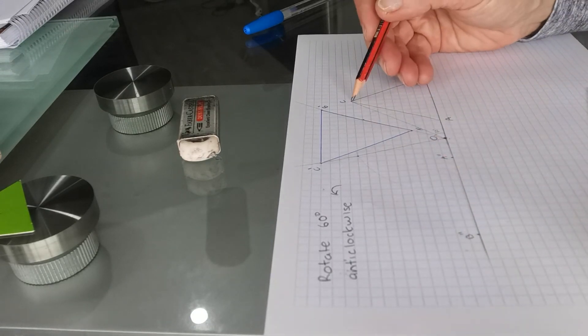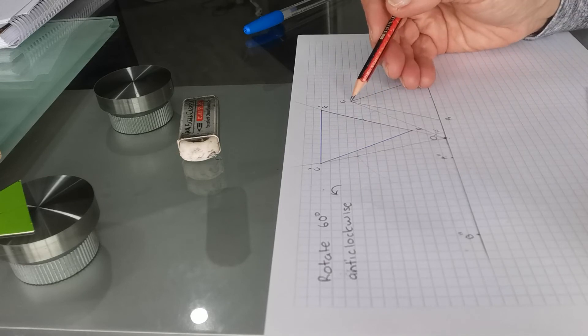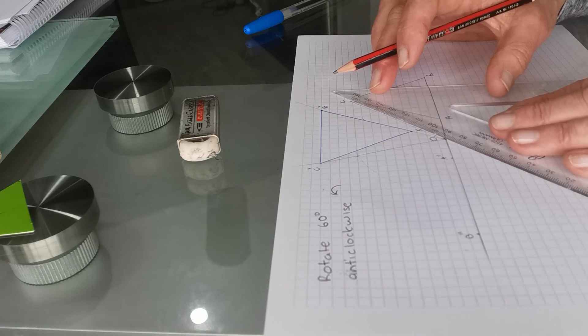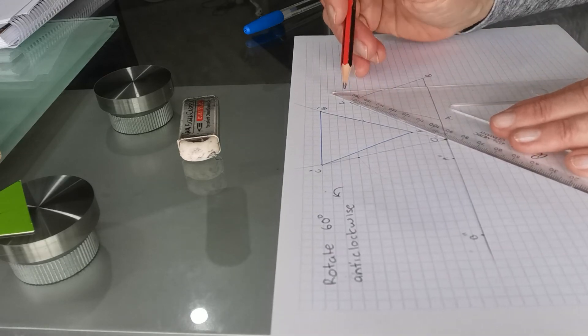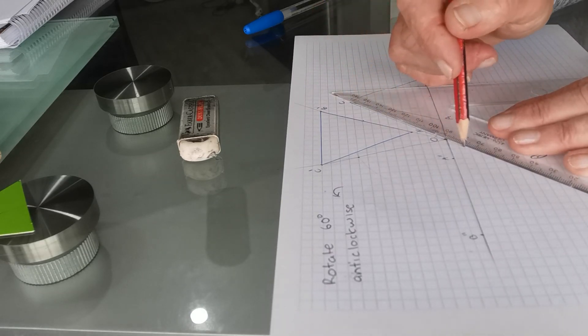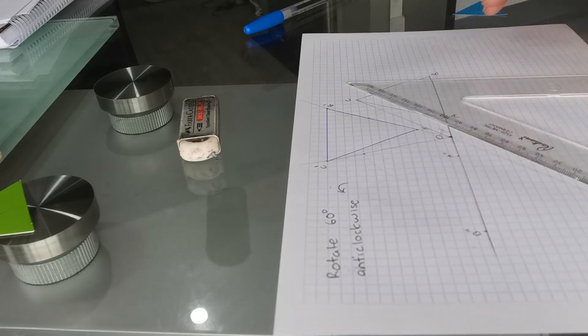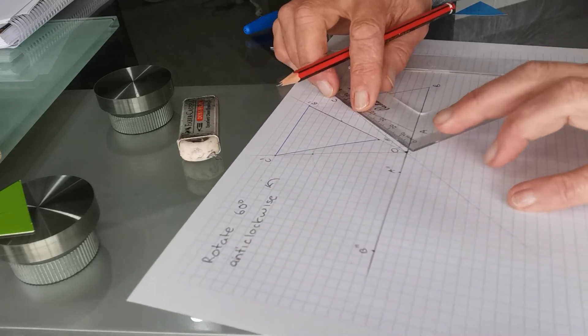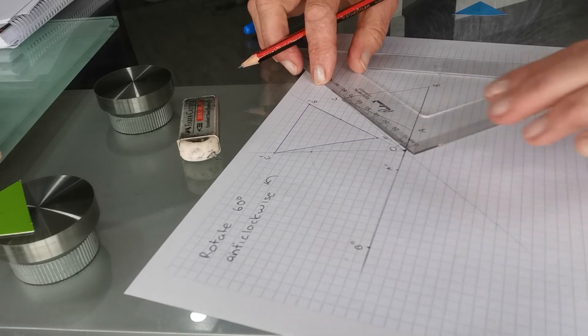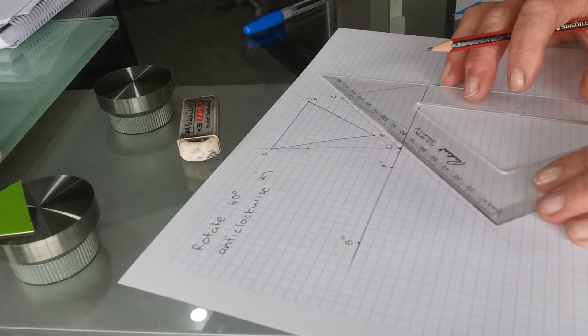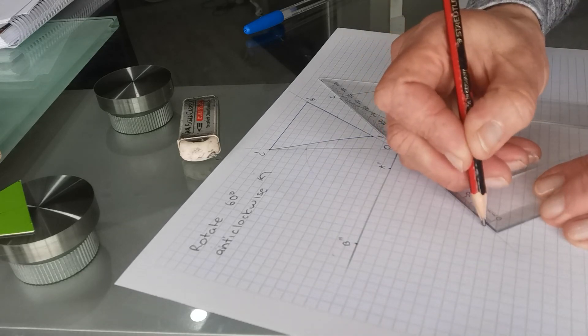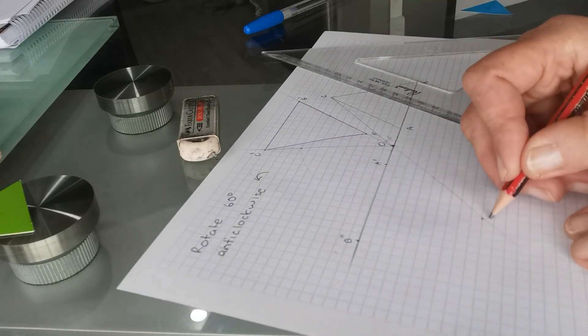So C would be exactly on the same line from C through the center of rotation through here. Straight through and somewhere along that line is C. And it will be exactly the same distance. We measured this before as 7.2. So if we measure 7.2 along here, we get C double prime.